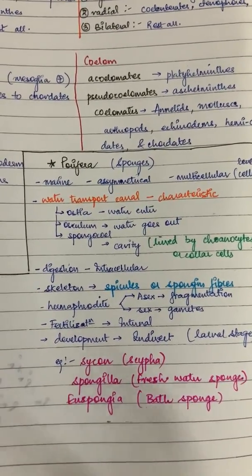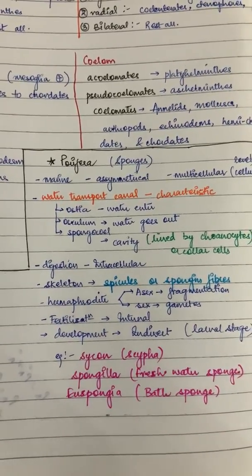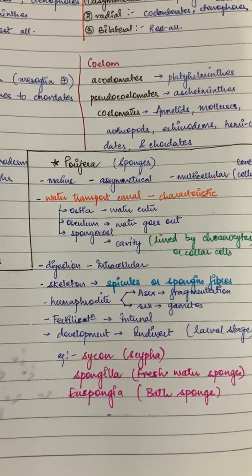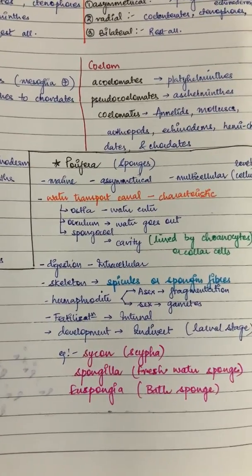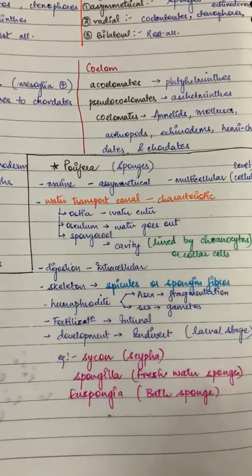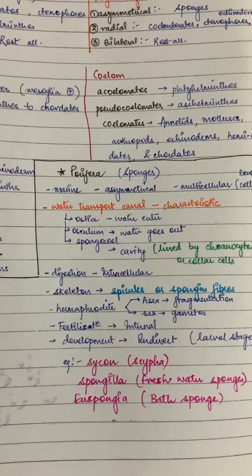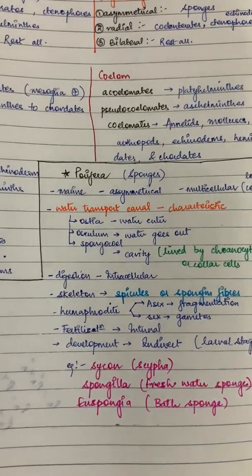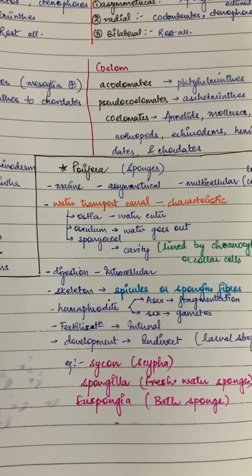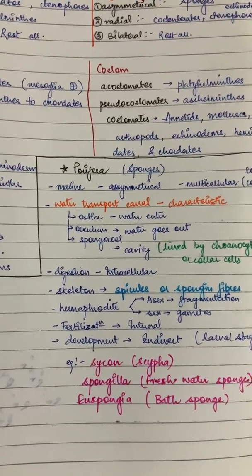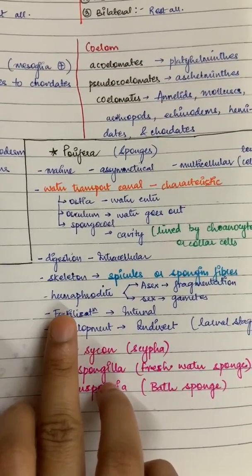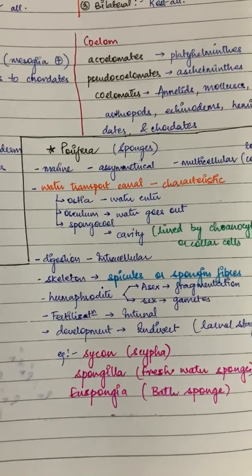The skeleton is made of spicules, which you will find noted for other phylums as well. Porifera are hermaphrodite. Reproduction occurs both asexually and sexually. You can be asked which of the following phylums reproduce asexually or are hermaphrodites. You should remember for all phylums whether they are hermaphrodite, and whether fertilization is internal or external.